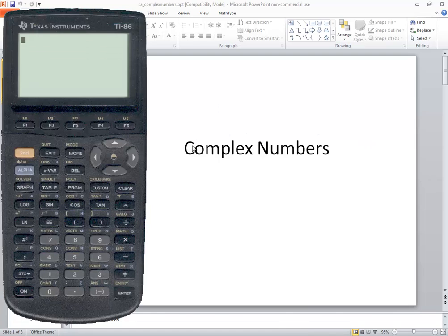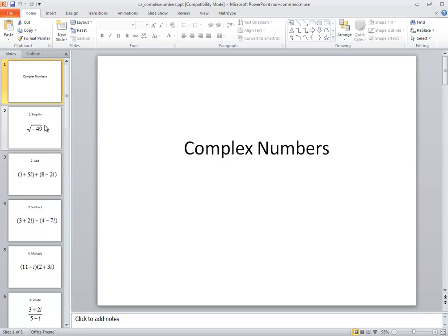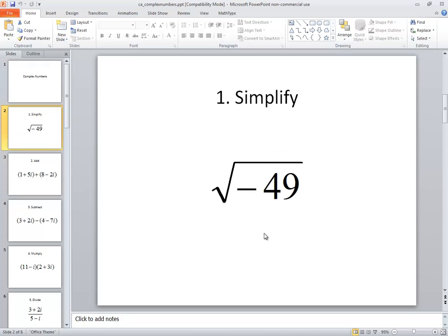Let's take a look at complex numbers on a TI-86 calculator. Specifically, we're going to look at the first problem, square root of negative 49.